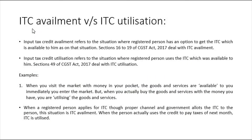There is a difference between ITC availment and ITC utilization. ITC availment refers to the situation where a registered person has the option to get the ITC available to him. Sections 16 to 19 of the CGST Act deal with ITC availment. ITC utilization refers to the situation where a registered person actually uses the ITC available to him. Section 49 of the CGST Act 2017 deals with ITC utilization.